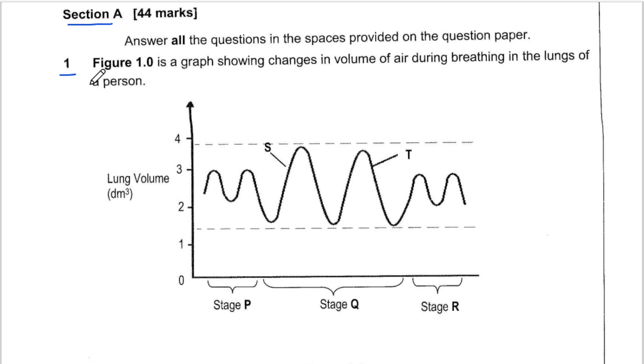Question 1, figure 1.0 is the graph showing changes in volume of air during breathing in the lungs of a person. Here we have the volume which is actually happening in the lungs. We have the volume scale reading from 0 all the way to 4 cubic deciliters.